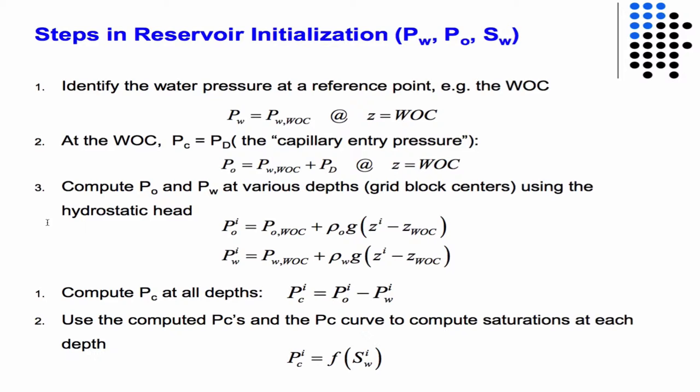The initial starting point is the water pressure at a reference point, and the best one is the water-oil contact line — the point where saturation of water is one and there's only oil above it. This ignores some transition region that we know really exists, but if we assume there's no transition region, that's the water-oil contact line.